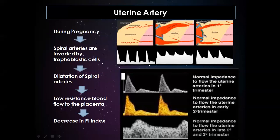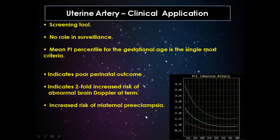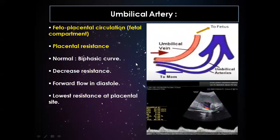This is the typical uterine artery flow seen in the first trimester and early second trimester. From the late second trimester and third trimester, there should be a low-resistance flow pattern. The uterine artery is a screening tool, not a surveillance tool. Mean PI percentile according to gestational age is the single most important criterion; abnormal PI indicates poor perinatal outcome, a two-fold increase in risk of abnormal brain Doppler at term, and increased chances of preeclampsia.